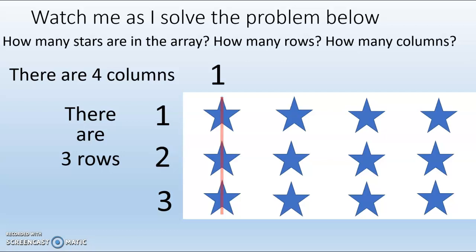And there are four columns. One, two, three, four. So if I have three in each one of the columns, then three plus three plus three plus three is 12. So there are 12 stars in this array.